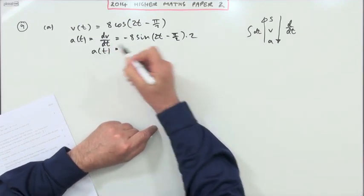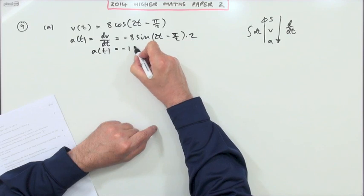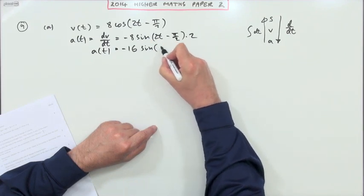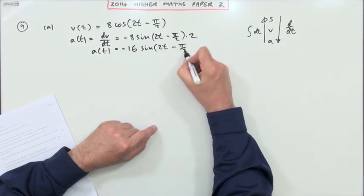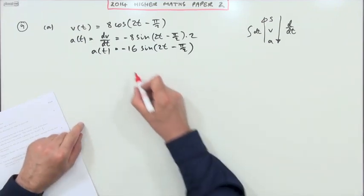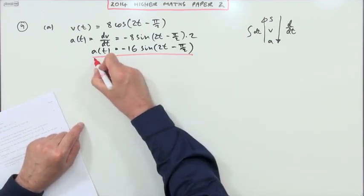So that means the acceleration will be 2 times 8, negative 16 sin(2t - π/2). And that's 3 marks worth.